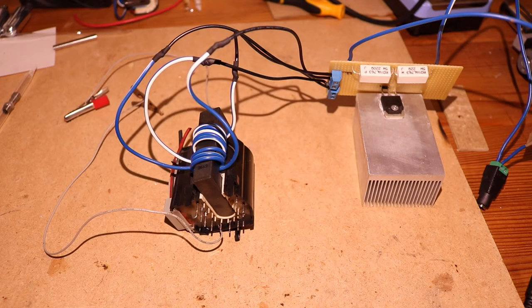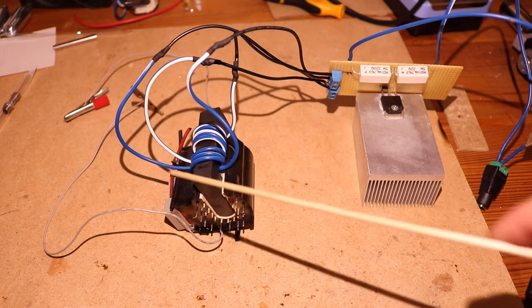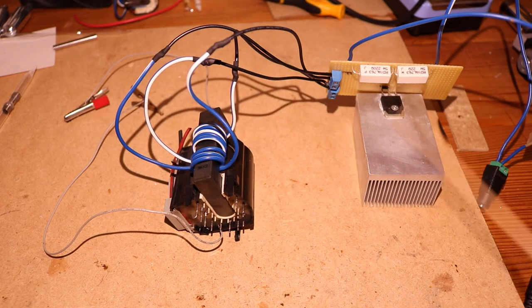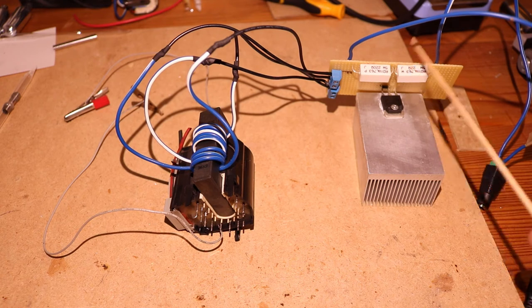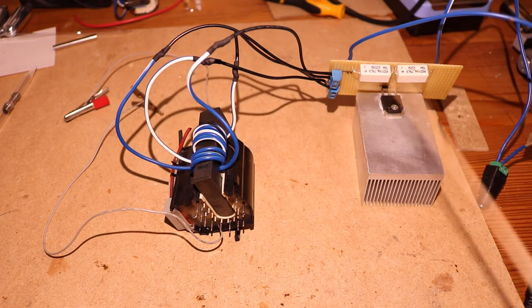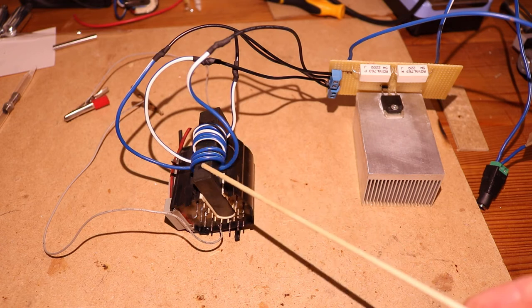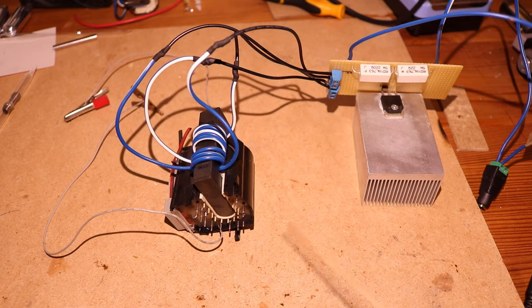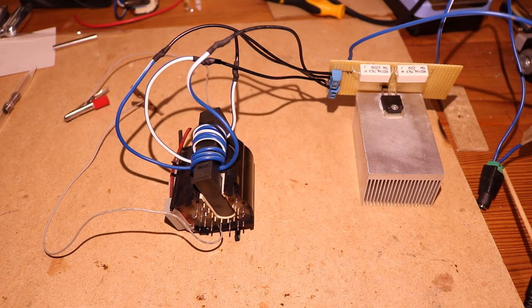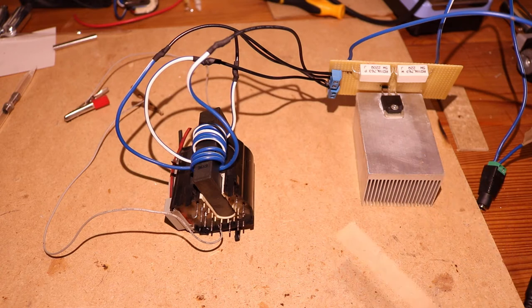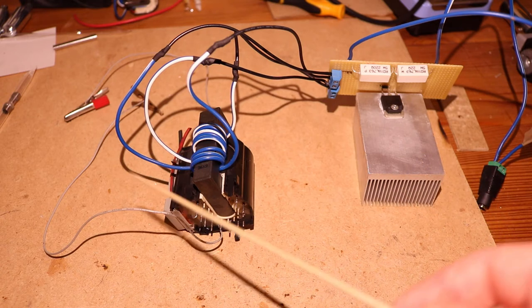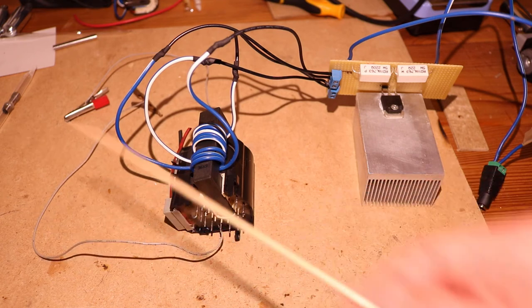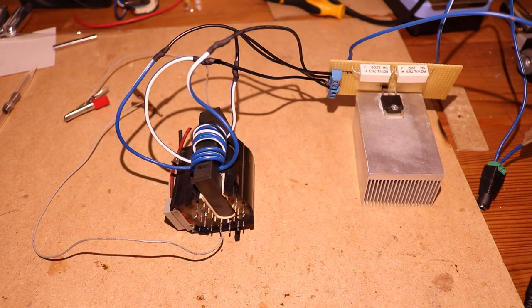You also need a high voltage power supply. I have this flyback transformer and this super simple flyback driver. You can find plans for this on the internet, it's super simple to build. This gives you around 30 kilovolts or something, but you actually don't need that much. This takes 12 volts but I only have it turned to like 5 or 6 volts input, and this gives you a voltage that is fine for the cathode ray tube.